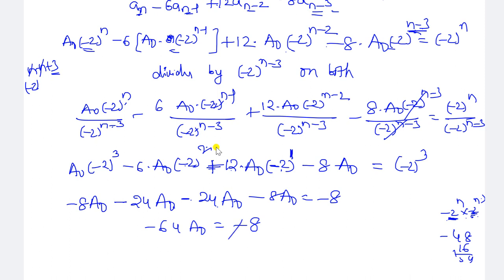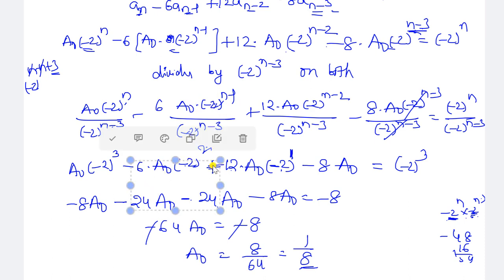Canceling the minus signs on both sides, 64·a_naught equals 8, so a_naught equals 8/64, which simplifies to a_naught equals 1/8.